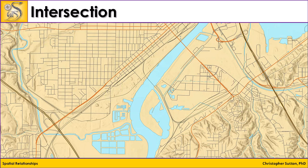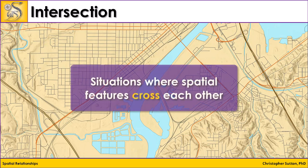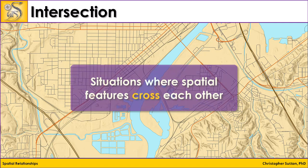Another spatial relationship is intersection. This type of relationship describes situations where spatial features cross each other. For example, in a city, roads often intersect other features like rivers and railroads. We have to understand these intersections for things like bridge maintenance, flooding, railroad crossings, or public safety.